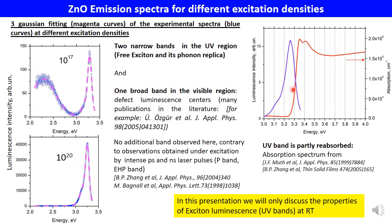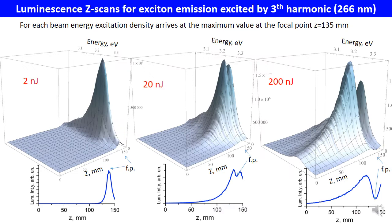Due to the sharp rise of the absorption coefficient from 3.25 eV to 3.35 eV, as shown in this figure, the UV band is partly reabsorbed, particularly on the high energy side of the band, and the measured emission can be slightly underestimated. No additional bands like P-band or electron-hole plasma bands are observed here, contrary to observations obtained under excitation by intense picosecond and nanosecond laser pulses. Only the free exciton luminescence region will be discussed in this presentation.